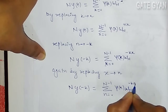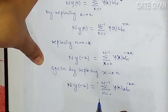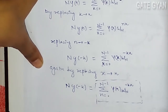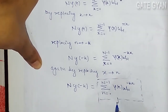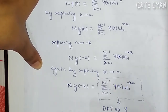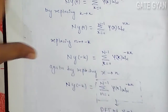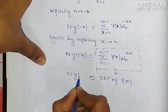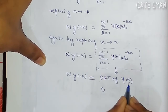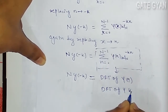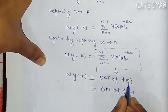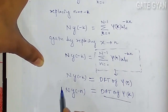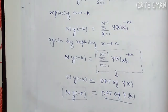I can see that this is nothing but the expression for the DFT of Y[n]. So the DFT of Y[n] equals N·y[-k]. By replacing n by k, the DFT of Y[k] will become N·y[-n].